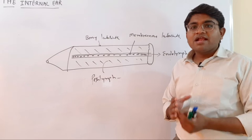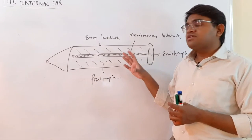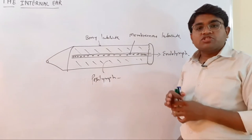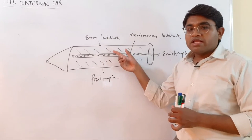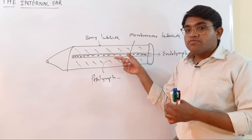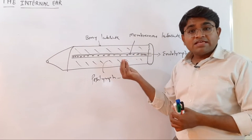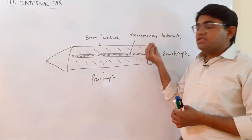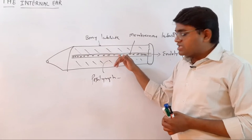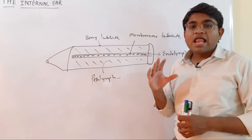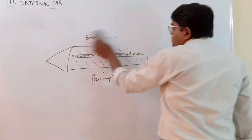So we can understand that the inner ear or the labyrinth is formed by two different parts. On the outer part it is formed by the bony substance, known as the bony labyrinth, and within this bone there is a membranous structure known as the membranous labyrinth. The fluid inside the membranous labyrinth is the endolymph, and the fluid separating the membranous labyrinth from the bony labyrinth is the perilymph. This bony labyrinth has three parts.